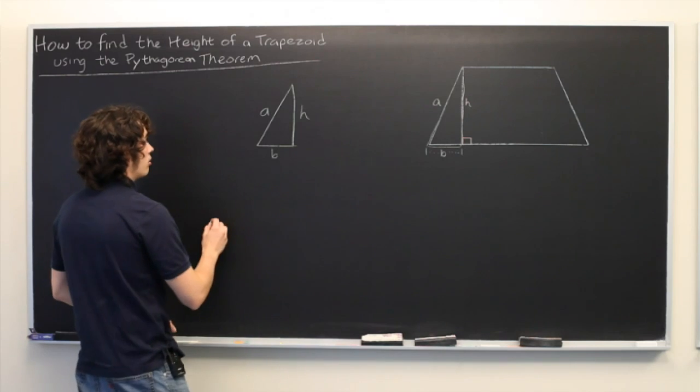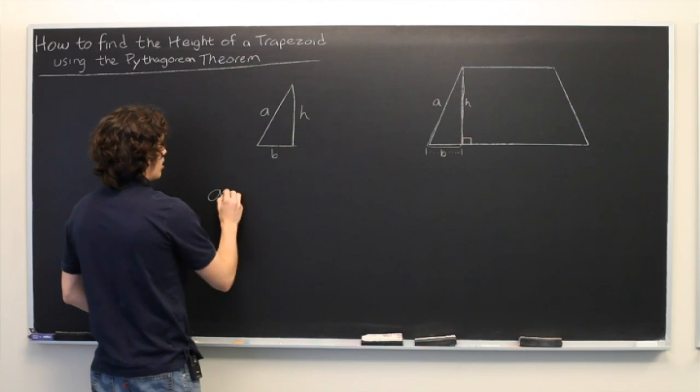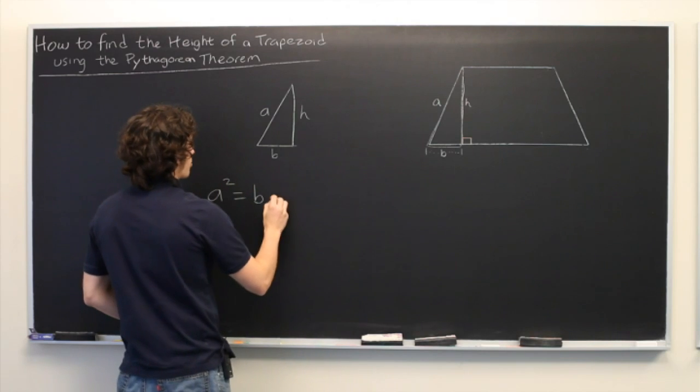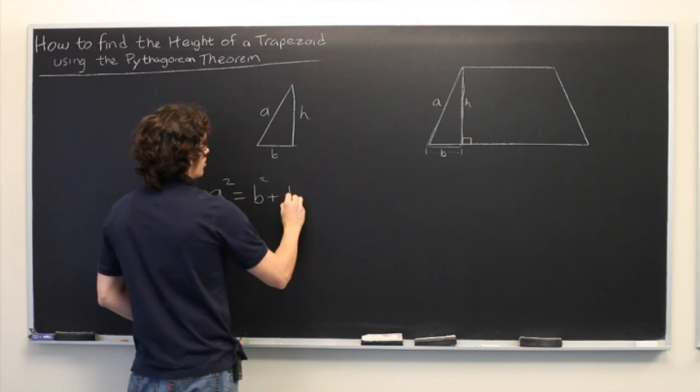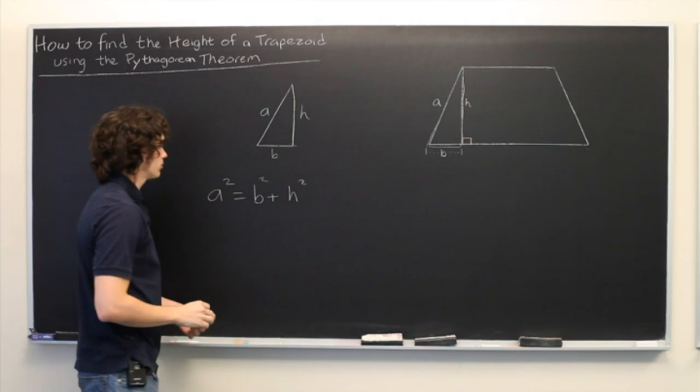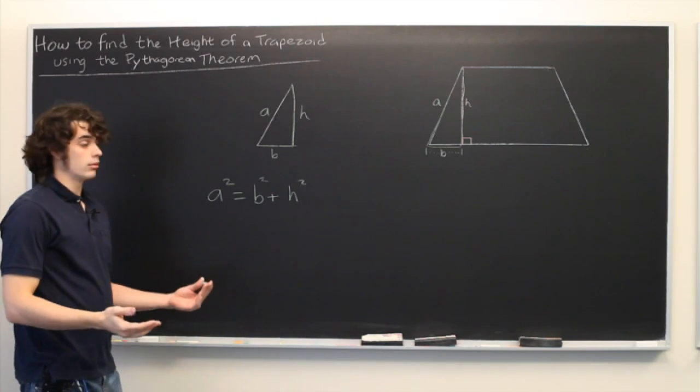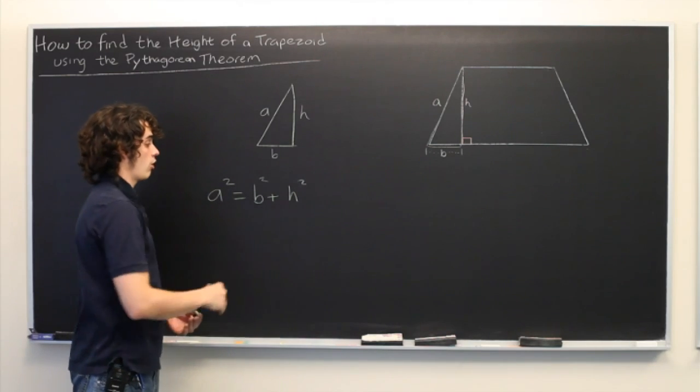The Pythagorean Theorem tells us that A squared equals B squared plus H squared. Now what we want is to rewrite this formula to solve explicitly for H.